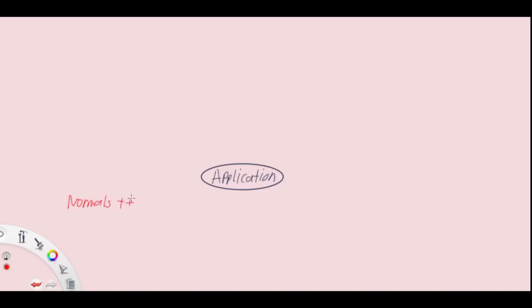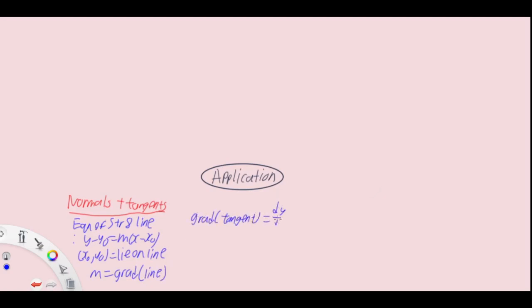We have application, starting with normals and tangents. To find their equations, use the equation of a straight line: y minus y zero equals m times x minus x zero, where x zero y zero is any point on the line and m is the gradient. The gradient of a tangent is dy dx at any particular point x. Same for normal, just that it's minus 1 over dy dx equals minus dx dy.